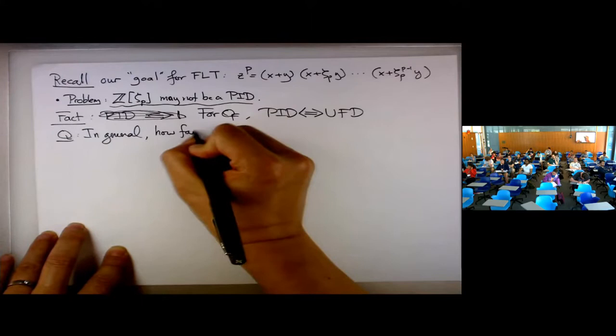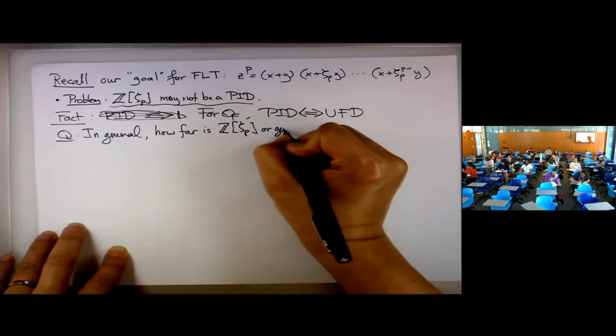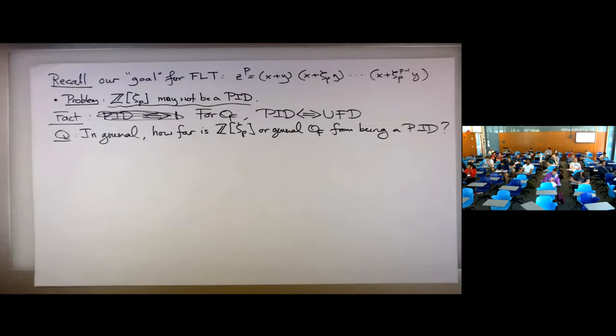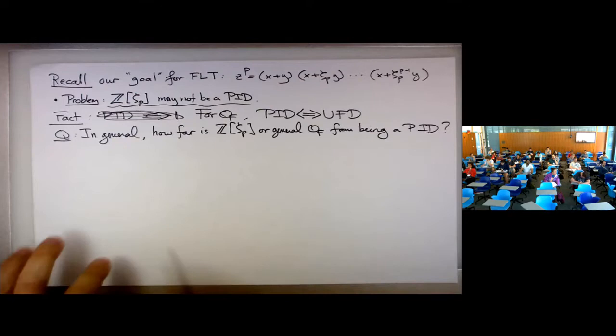These rings may not be PID or UFD. So we want to ask: how far is OF, in general, from being a principal ideal domain? This is a very natural question — to give a quantitative measure of how far the ring of integers is from being a PID, and therefore how far it is from being a UFD for factoring elements instead of ideals.